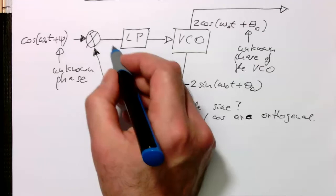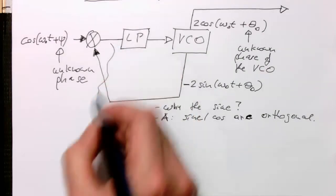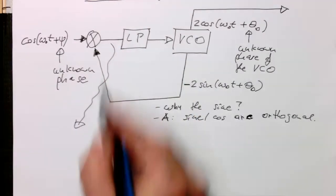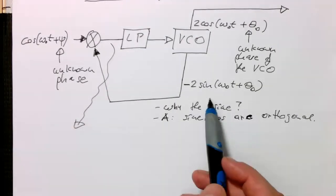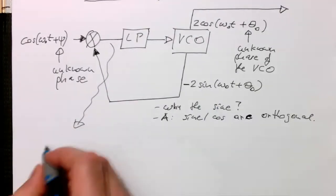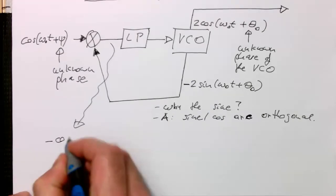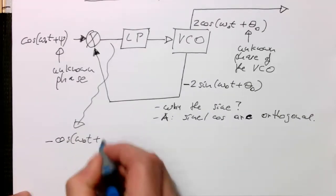So let's have a look, how does it look like at this point here? If we look at this point here, so we are multiplying the cosine with this minus sine here. So then we have minus cosine omega zero t plus psi,